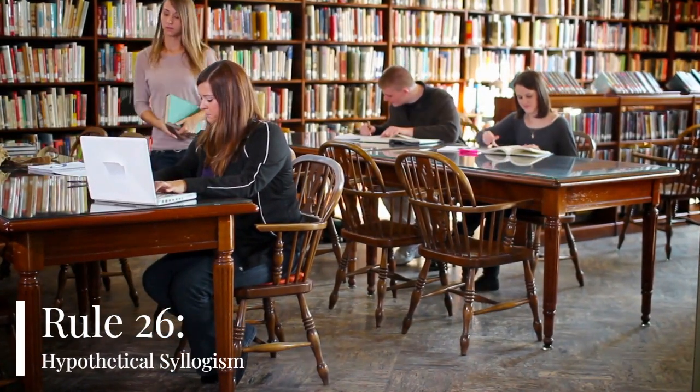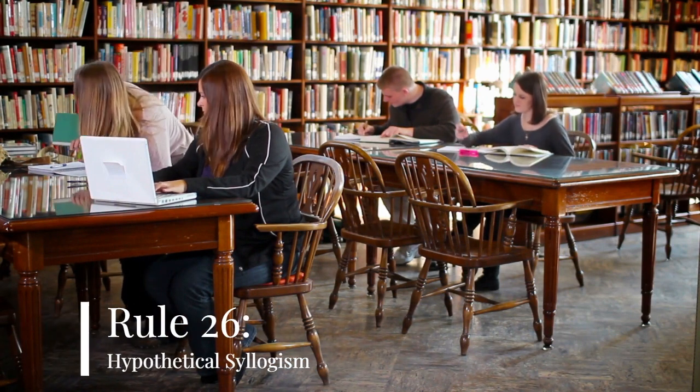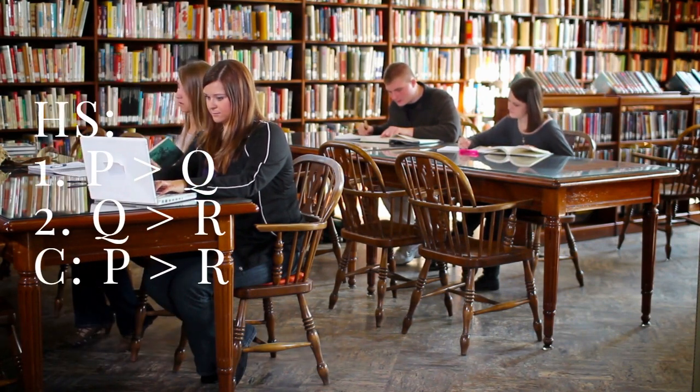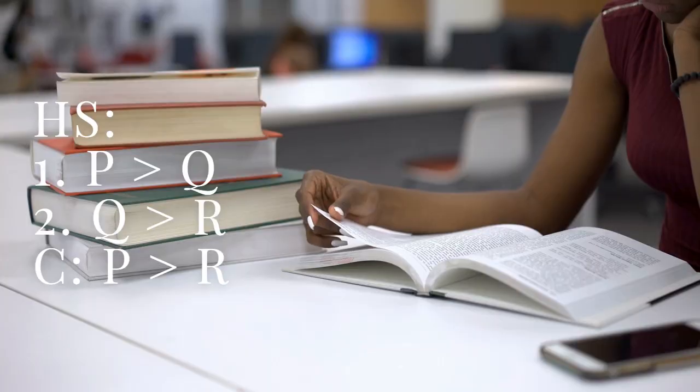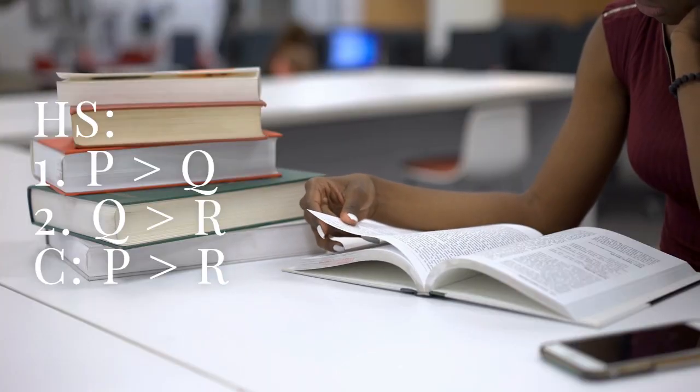As you'll recall, the hypothetical syllogism says that if P is true, then Q is true. If Q is true, then R is true. Therefore, if P is true, then R is true.